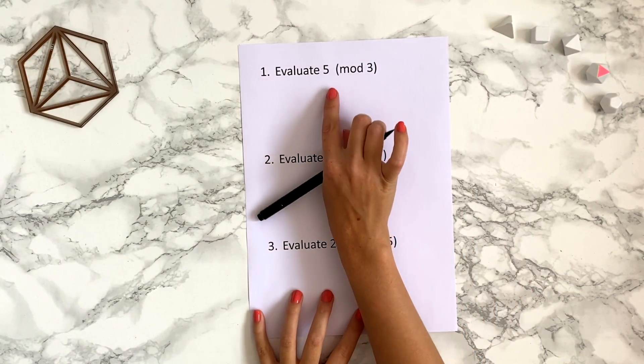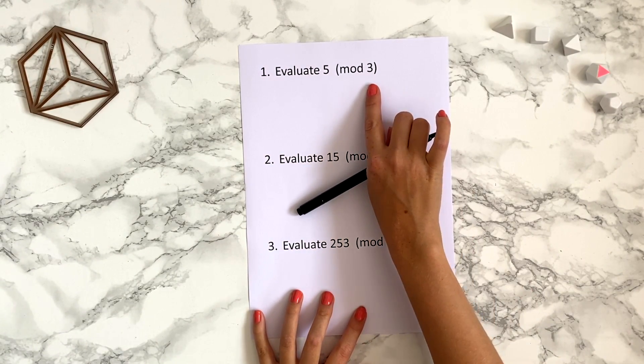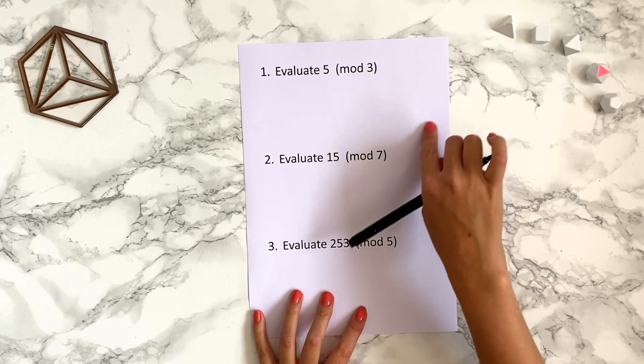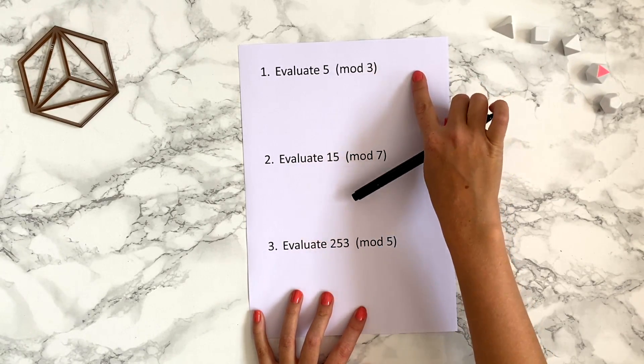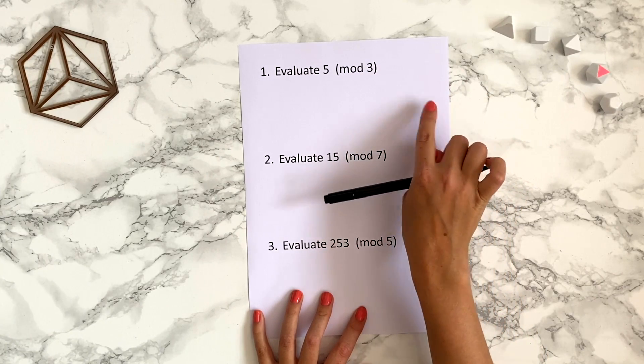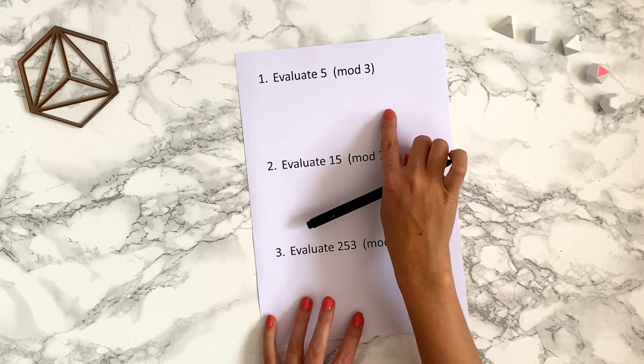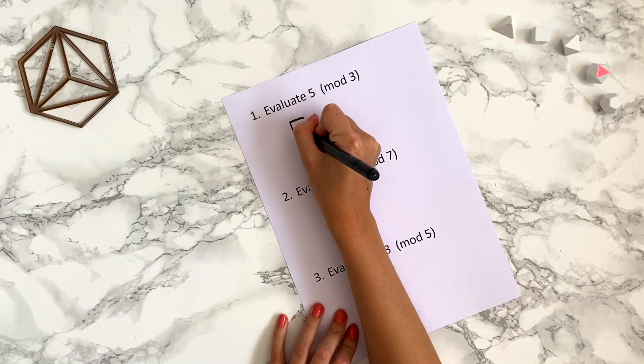So this question wants us to evaluate 5 mod 3. So we can think about this as a three hour clock. So we've got 0, 1 and 2. 3 would be above the 0, 4 would be above the 1 and 5 would be above the 2. So 5 is congruent to 2 mod 3.